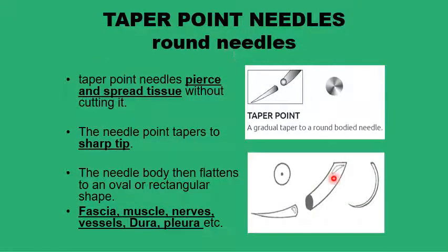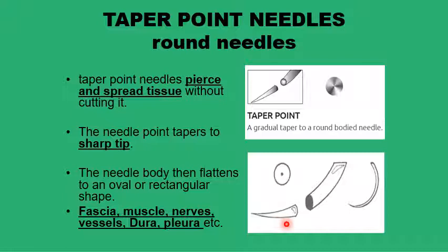The other blunt needle has a very sharpened tip like a trocar, which gives it its name: the taper point needle. It still has a rounded point overall — it's only the very tip that is sharpened. The rest of the needle body is cylindrical or rectangular. This needle is commonly used for subcutaneous tissue, subcutaneous fascia, muscles, nerves, blood vessels, anastomosis, the dura, and the pleura. You only need to select the proper curvature for a particular task.